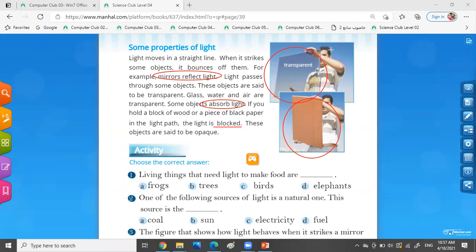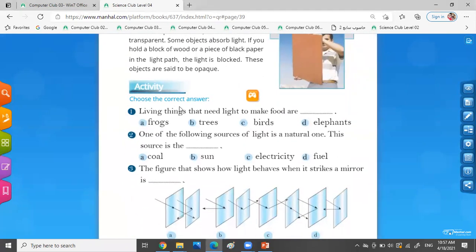Okay, let's do the activity. Choose the correct answer. Living things that need light to make food are: frogs, trees, birds, or elephants? Trees. Bravo.